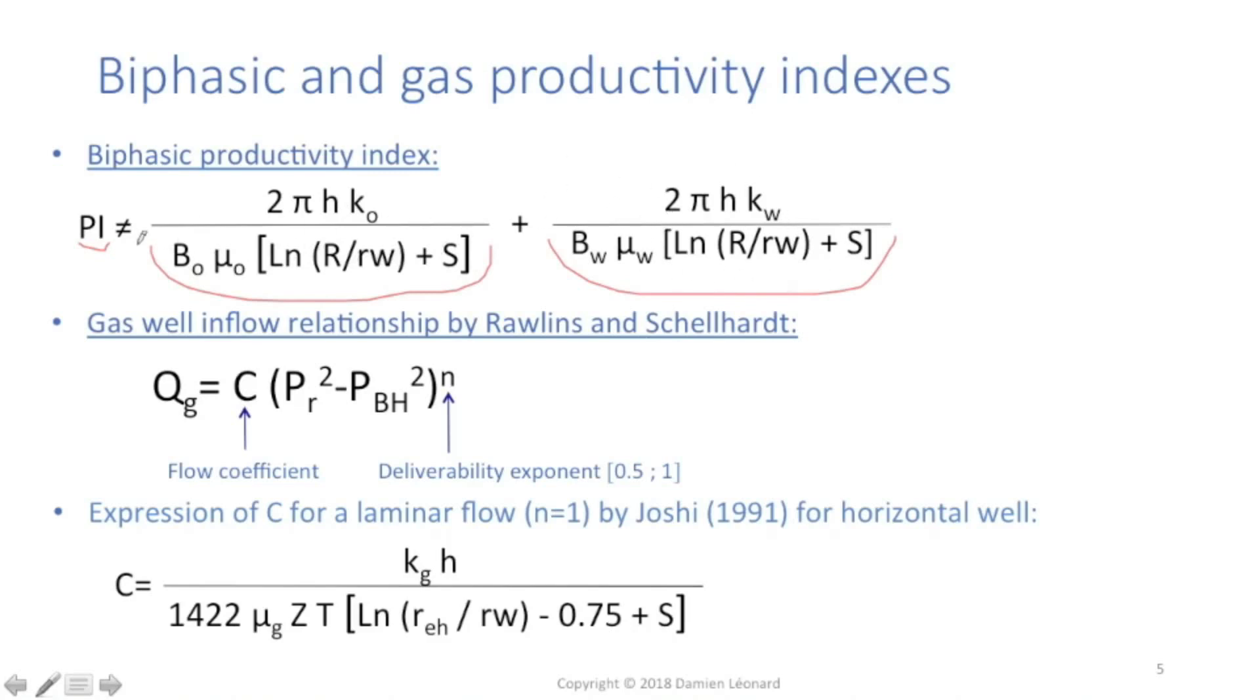Well, unfortunately, it doesn't work that way. So the productivity index for a biphasic well is not equal to the sum of this oil productivity index plus this water productivity index. In reality, the productivity index is going to be smaller than that.